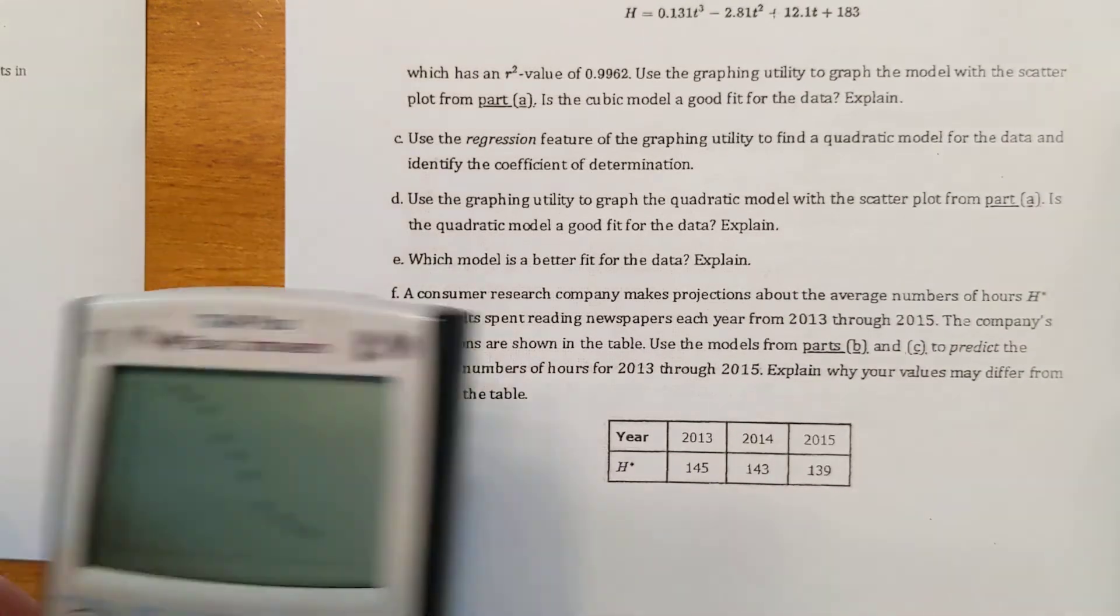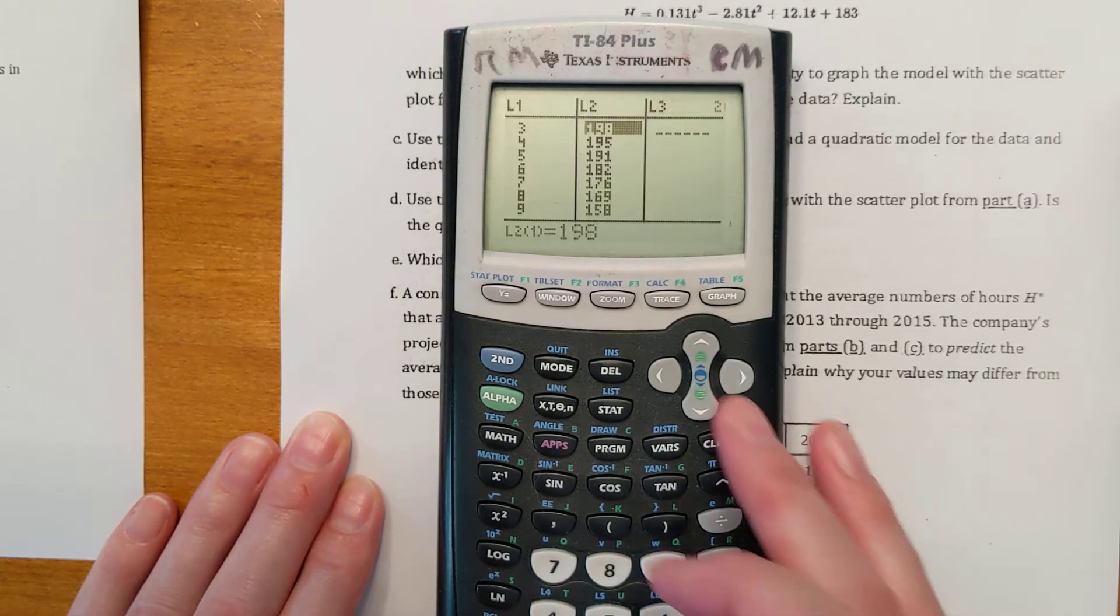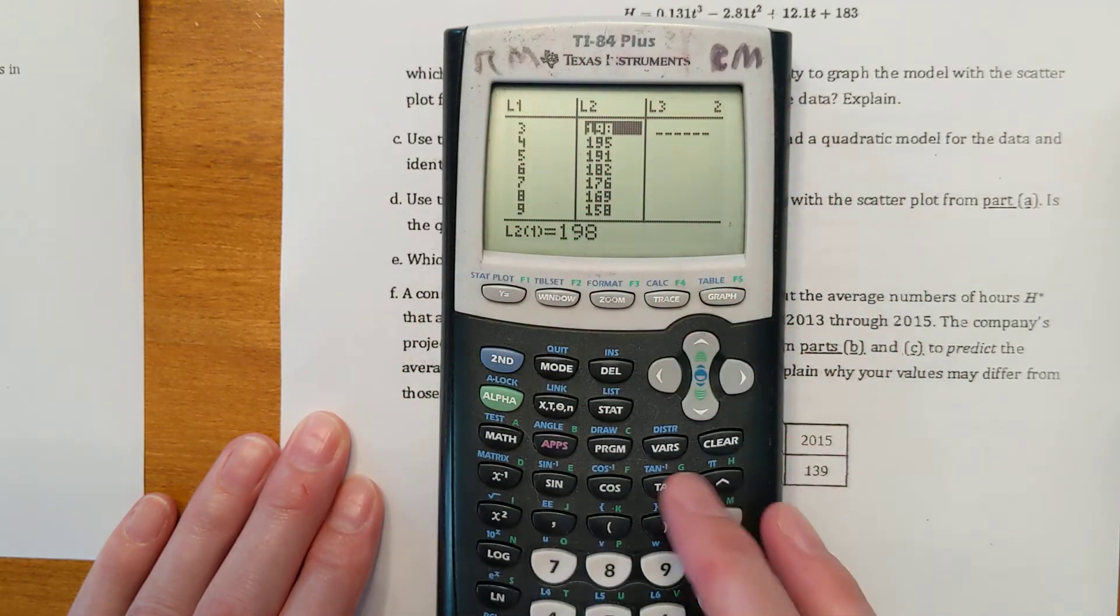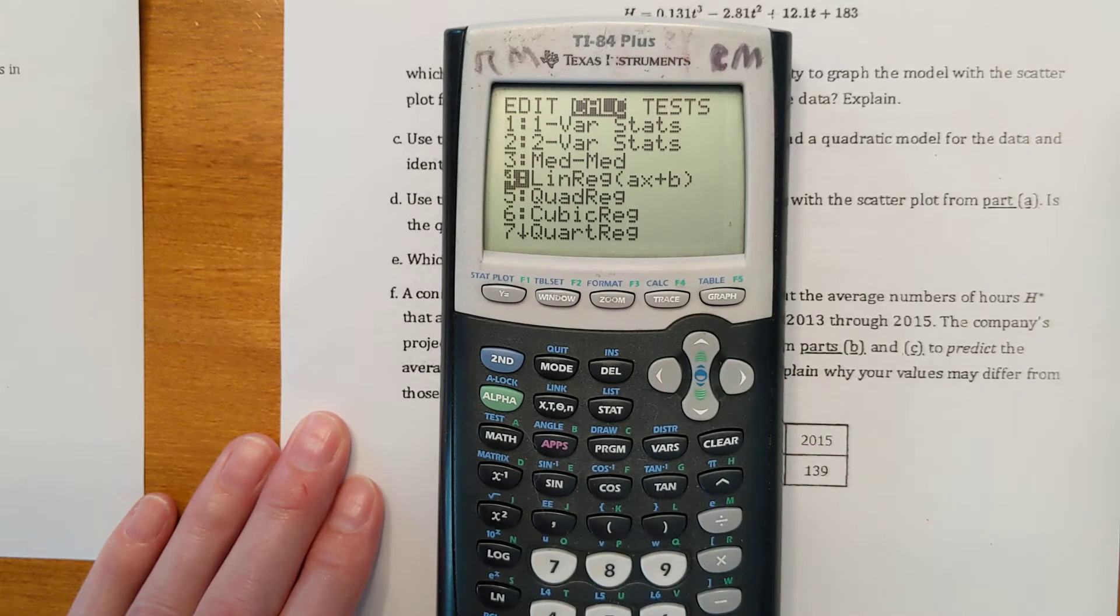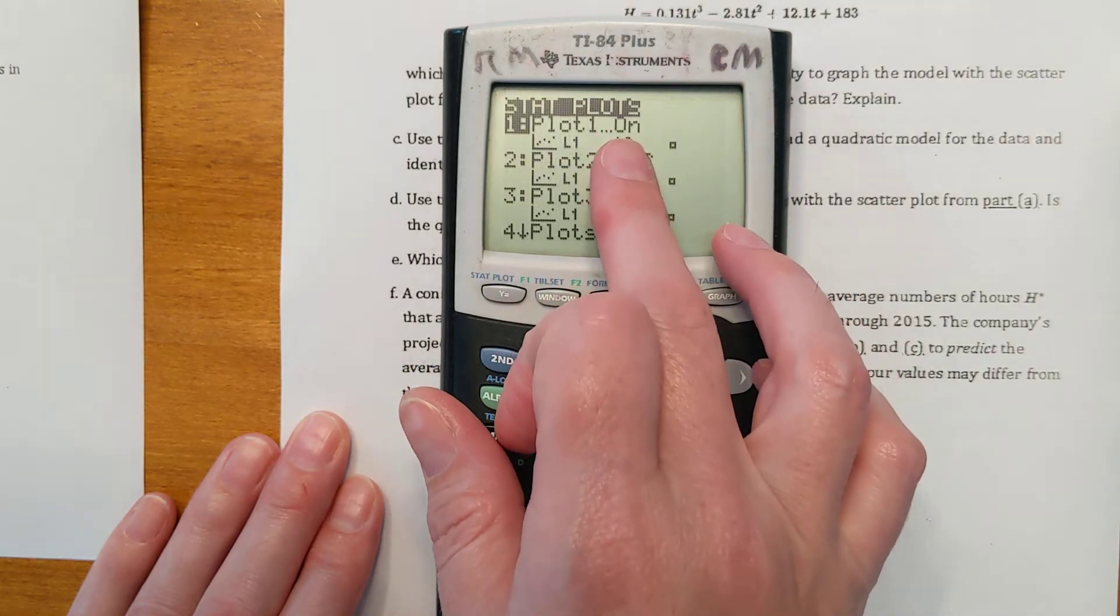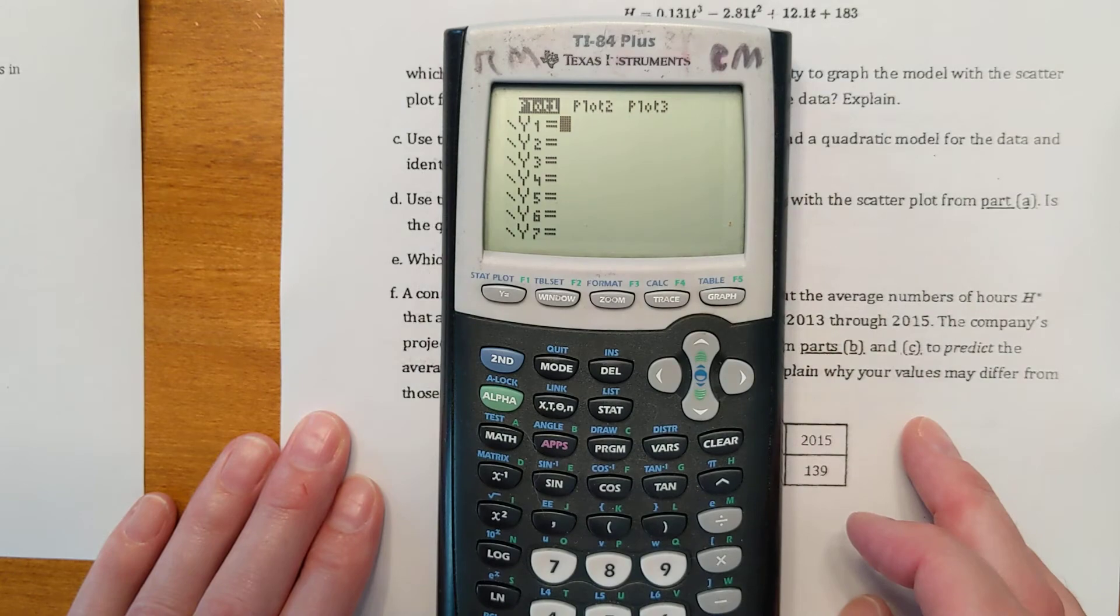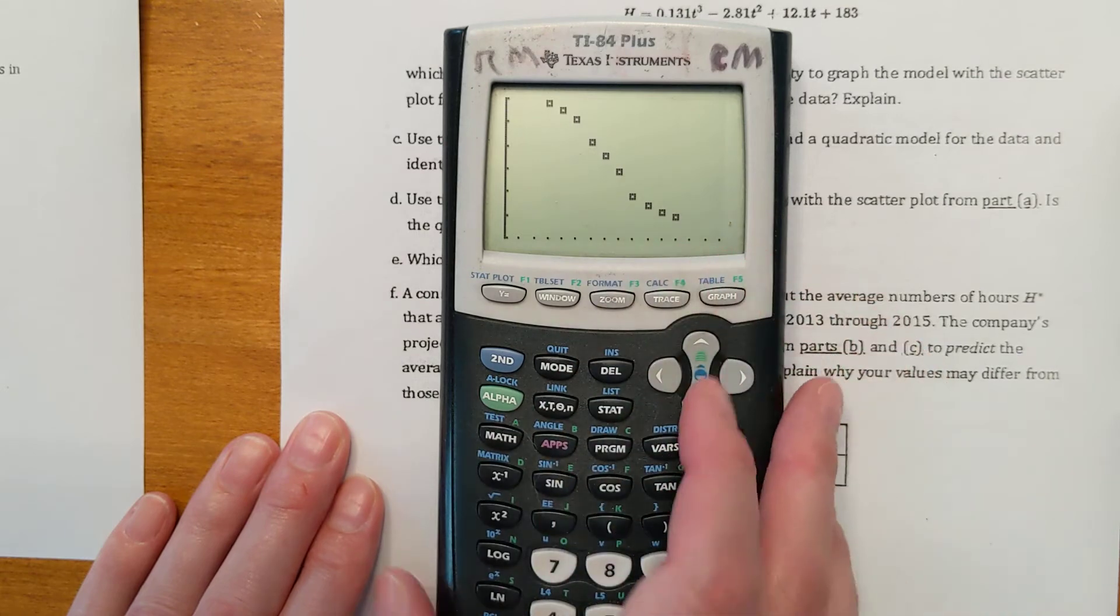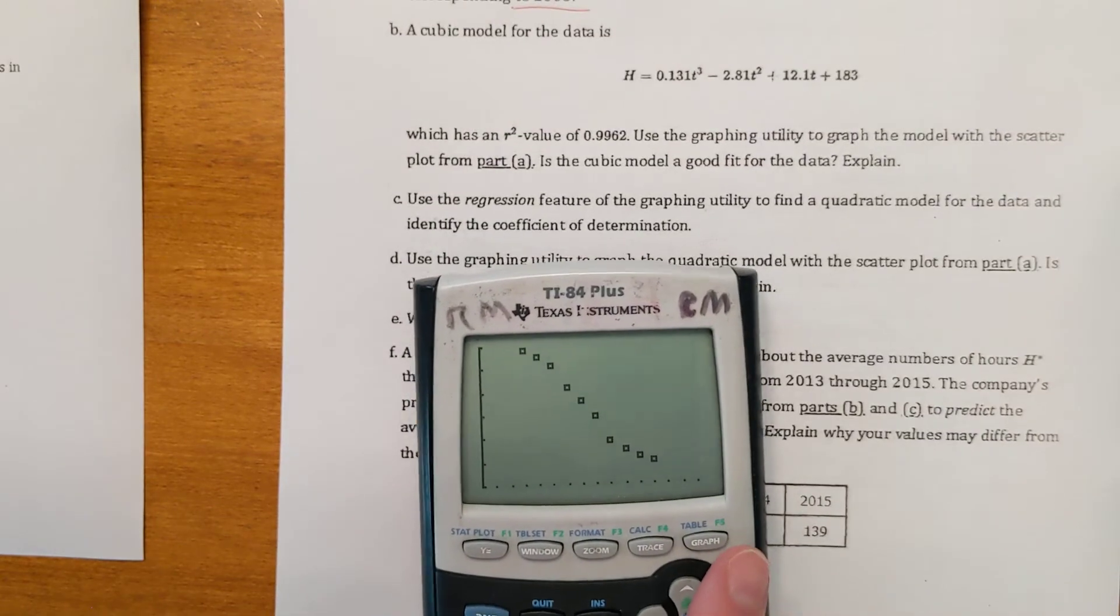So on the next page, what I did is I hit stat, edit, and you enter all the numbers under list one, enter all the X's and then all the Y's under list two. Then I went over and turned stat plot on. You need that on and double check on Y equals above it here. Plot one needs to be on. I changed my window under window to all these new numbers so that I could see all the points. So they said to make a scatter plot, which we did, that was A.